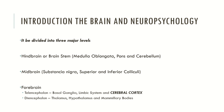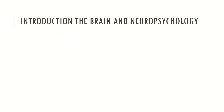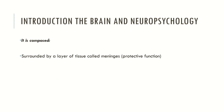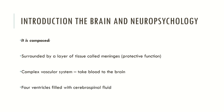The forebrain also contains the diencephalon, which contains the thalamus, hypothalamus and mammillary bodies. The brain is also composed by several layers of tissues called meninges. Some of these tissues are very important in protecting the brain if some major traumatic event occurs. The brain also has a complex vascular system which takes blood to the brain, and this blood delivers the necessary nutrients that nerve cells need to function. The brain also has four major ventricles which are filled with cerebrospinal fluid. The cerebrospinal fluid is very important in keeping the brain healthy by removing dead nerve cells.